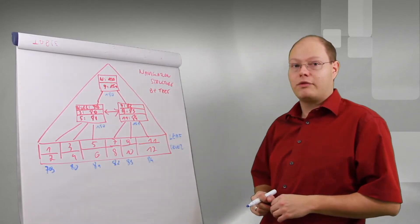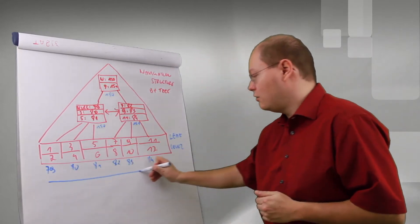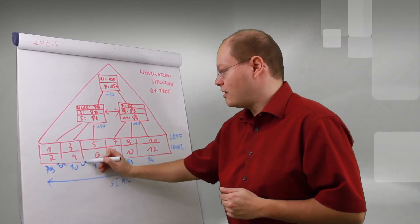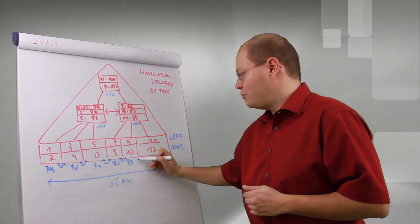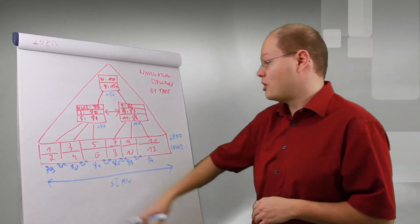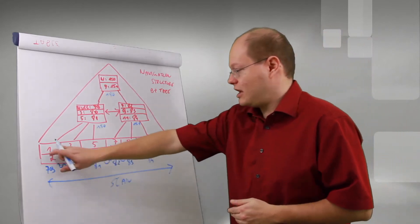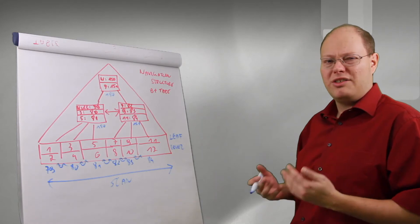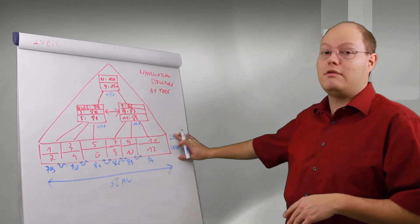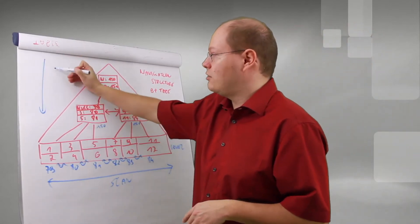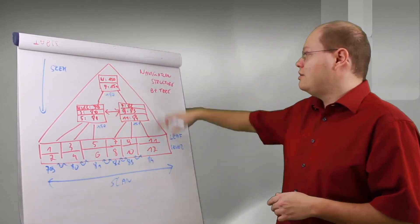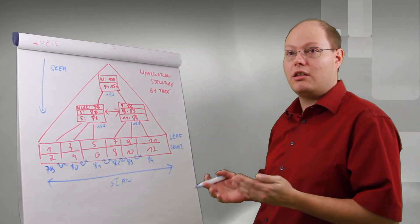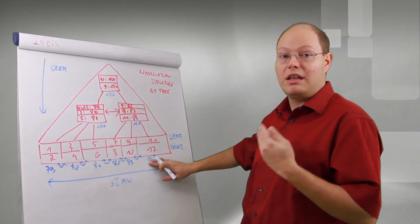With that structure we can perform two main operations. We can scan the whole index at the leaf level forward and also backward, because those pages are linked together through a double linked list — each page points to the next and the next points back to the previous. An index scan means reading page by page through the clustered index, just like going through a phone book page by page. It doesn't scale well with a huge amount of data, which is why we also have seek operations. A seek uses the navigation structure to find a specific record, or when doing a partial range scan, seeks to the first value and scans until hitting the end of the search predicate.